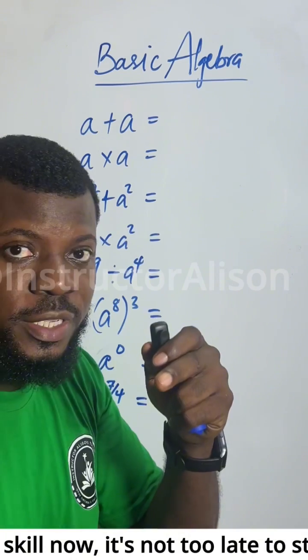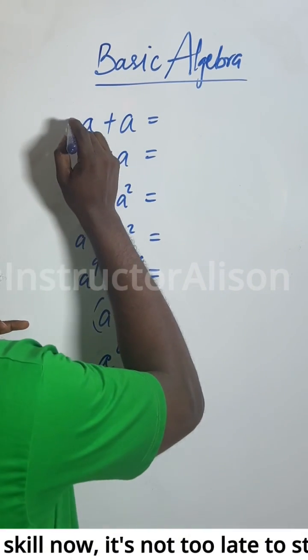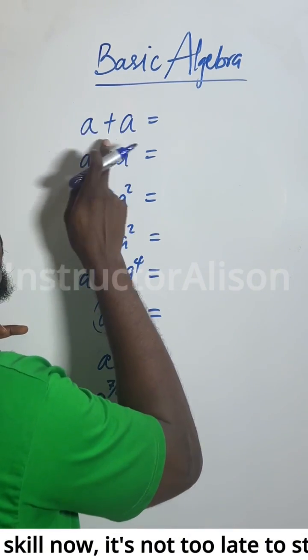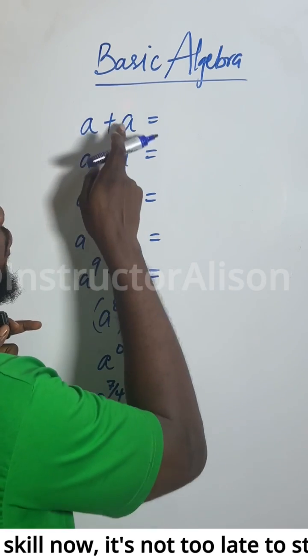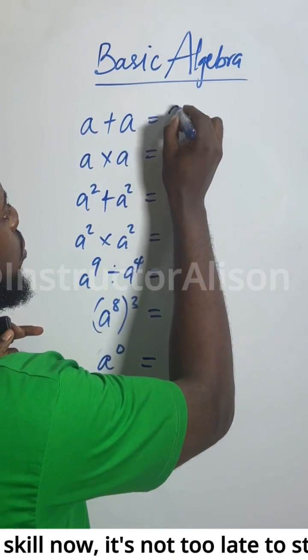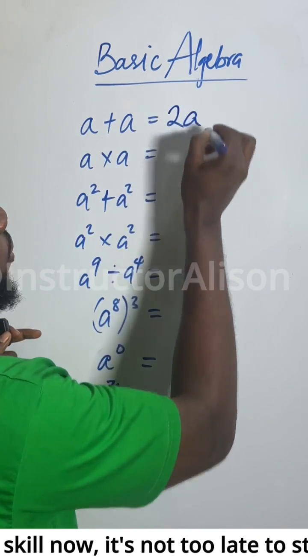What is A plus A? Put it in the comment section. If you add 1 to this, because this A, the coefficient is 1, the coefficient of this is 1, 1 plus 1 will give you 2. And because the A is common, then you take 1.